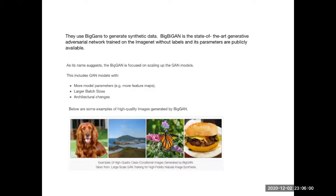To get rid of these issues, large research groups have trained big GANs. As the name suggests, big GANs focus on scaling up GAN models — including more model parameters, large batch sizes, and some architectural changes. These are some synthetic images that big GANs have created. In this work, they mainly look at a BigBiGAN model — a bidirectional GAN — trained by DeepMind in an unsupervised way on ImageNet without any labels, and whose parameters are publicly available.